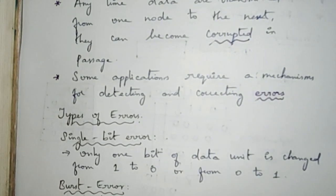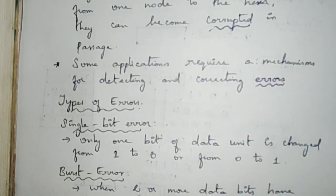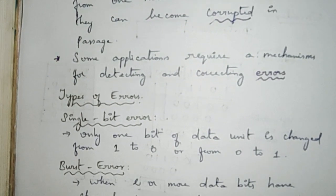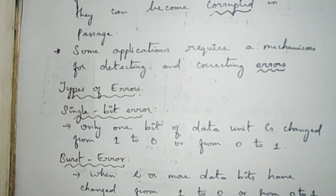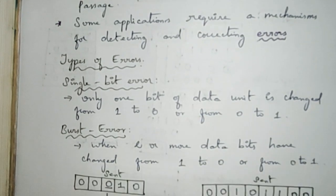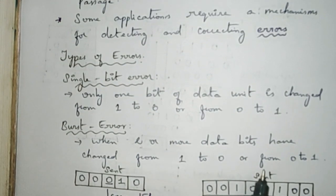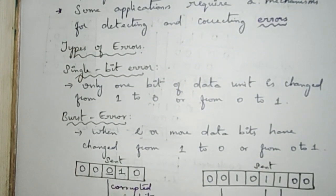First let us see what are the types of errors: single bit error and burst error. In a single bit error, only one bit of a data unit is changed, that is from 1 to 0 or from 0 to 1. Whereas in a burst error, two or more data bits have changed from 1 to 0 or from 0 to 1.